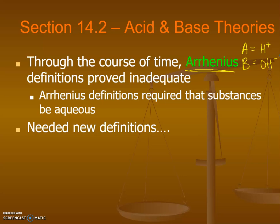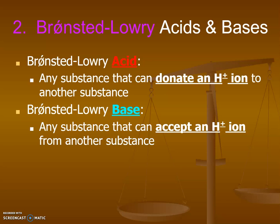With the evolution of technology in the early 1900s and the identification of new substances that could be aqueous, we had to come up with some new definitions — broadening what acids and bases are. That was with the work of two scientists, Bronsted and Lowry, giving us the Bronsted-Lowry definition of acids and bases.